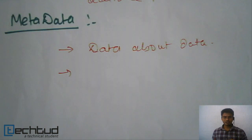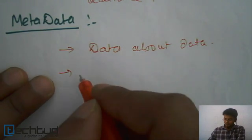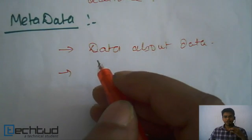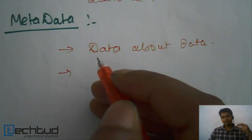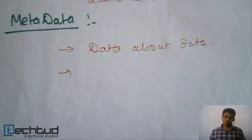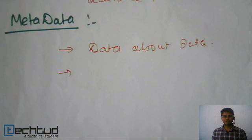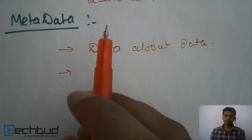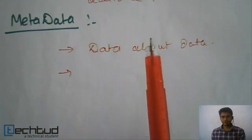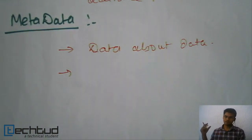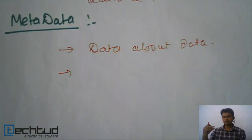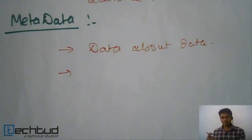For example, the schema itself — when you create a database, the database system creates it with an empty instance and an empty schema. We keep updating the database, and the database stores the current instance or current state in the schema. This is all metadata. I will show a demo in MySQL where the database system has extra tables created automatically, and in these tables the database system stores data about the other tables you create.